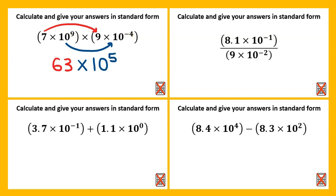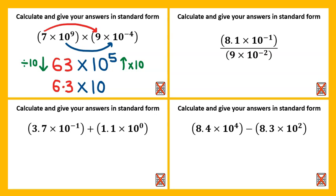Now the problem with leaving our answer like this is they asked us to leave our answer in standard form. The format of standard form requires the front number to be between one and ten — at the moment this isn't, so we need to change it. We can do this by dividing the front number by ten, leaving us with six point three. And to compensate, we multiply the power by ten, meaning we end up with the same number overall. So the final answer would be six point three times ten to the power of six.